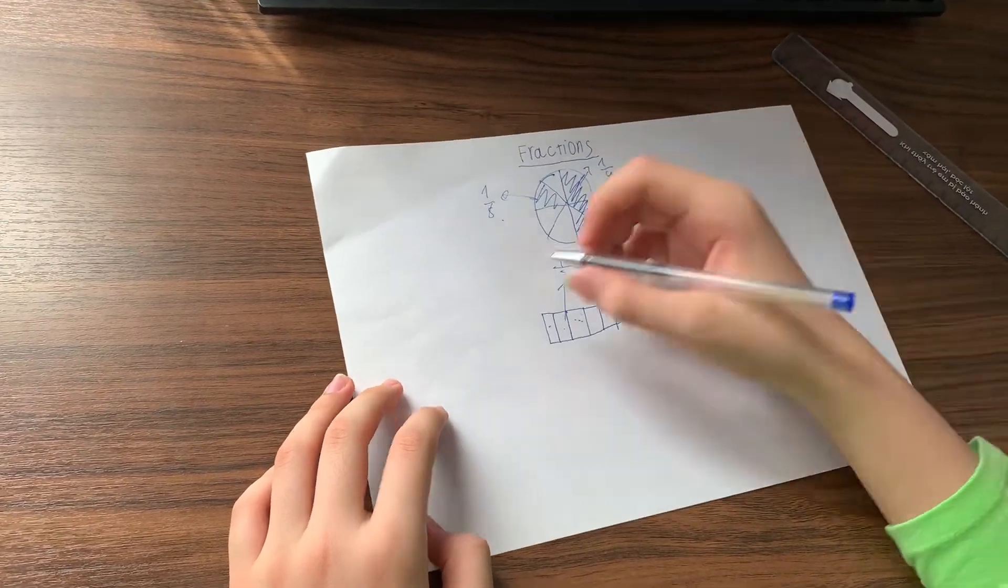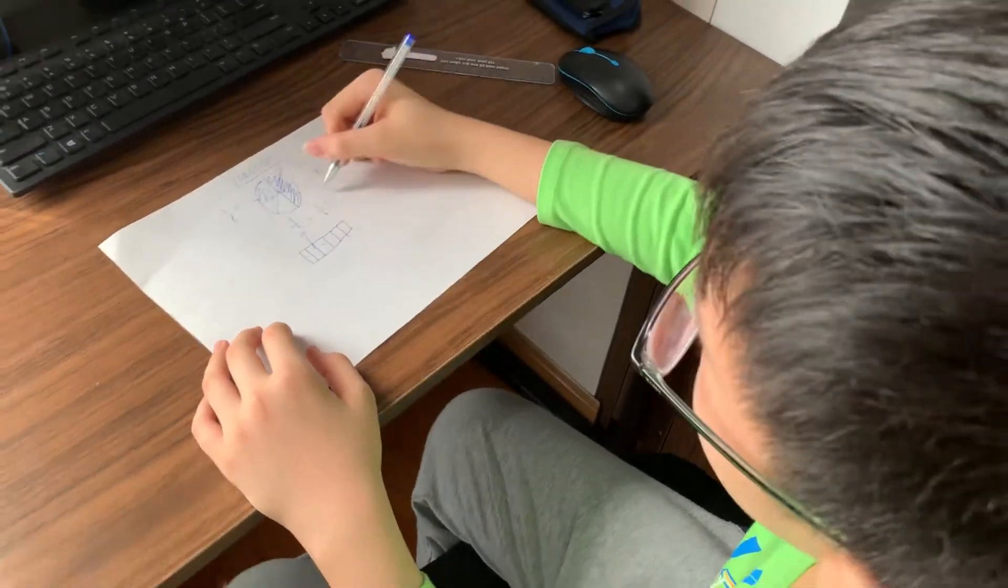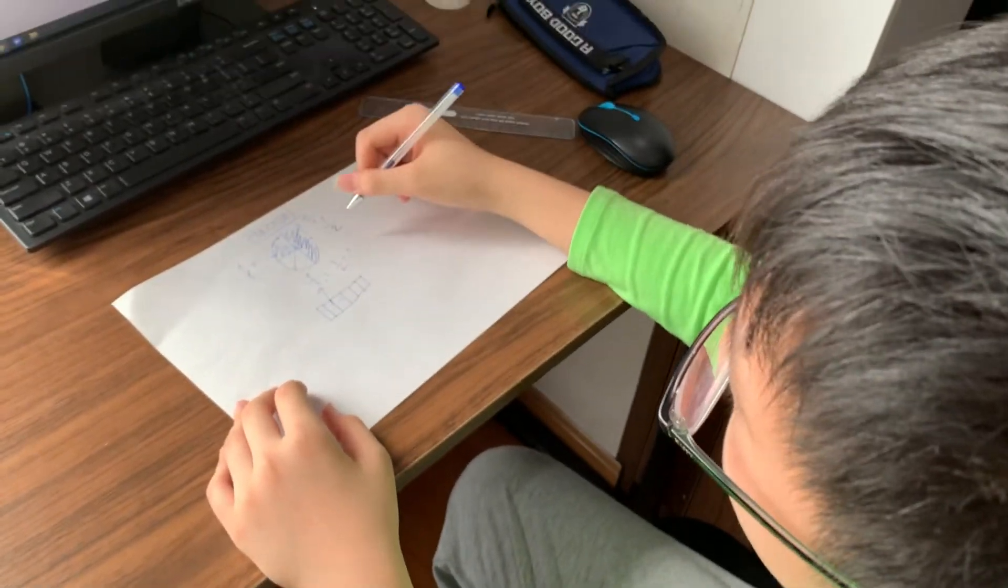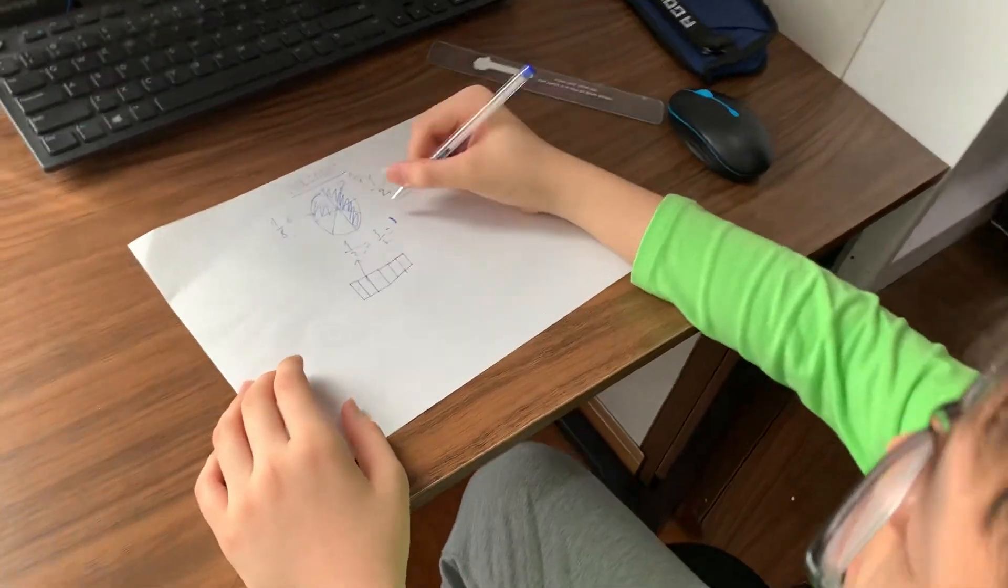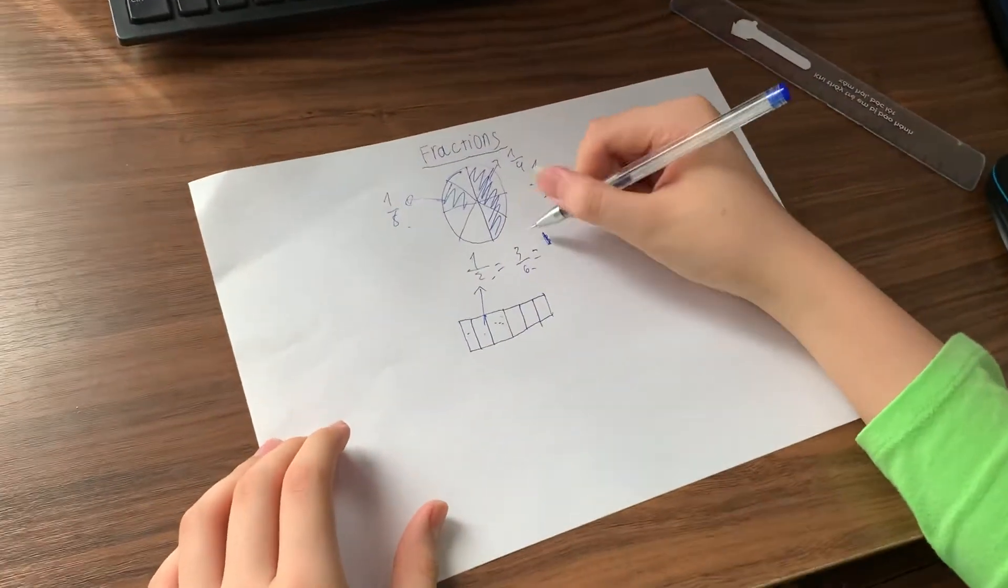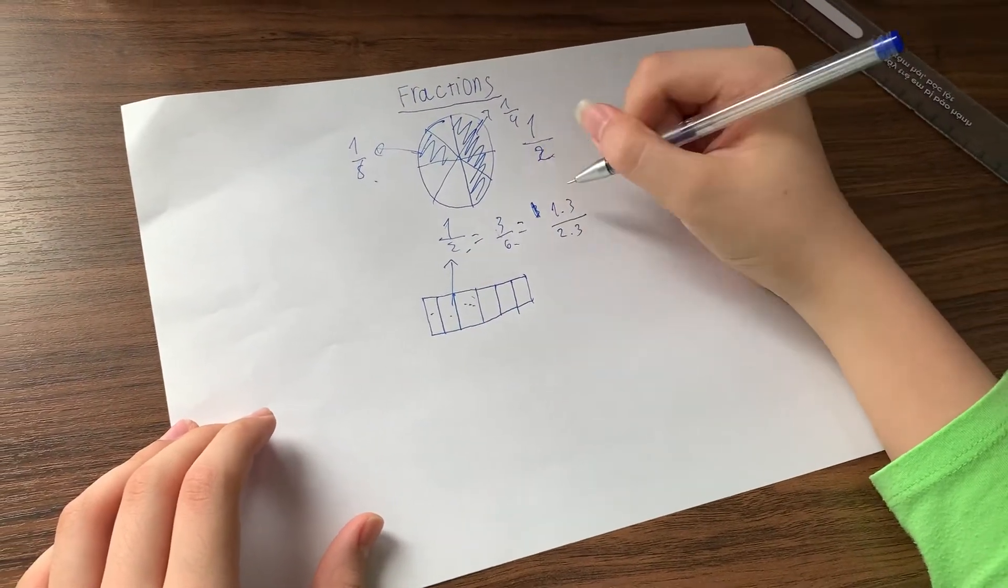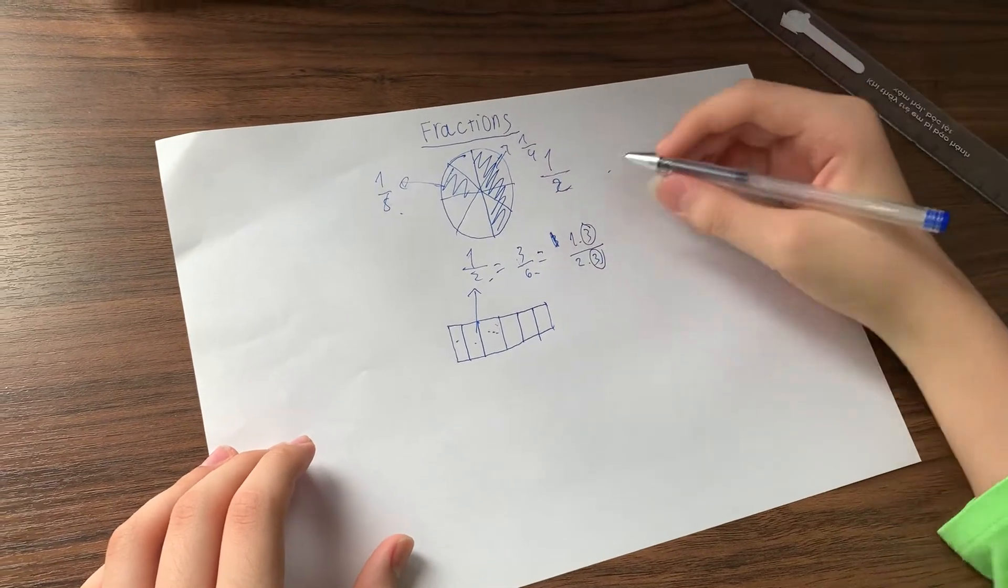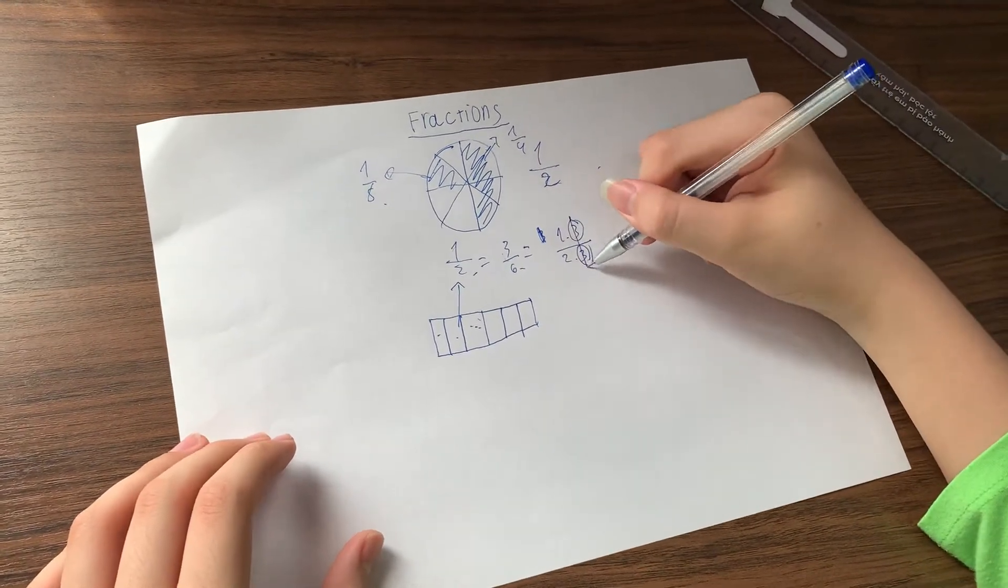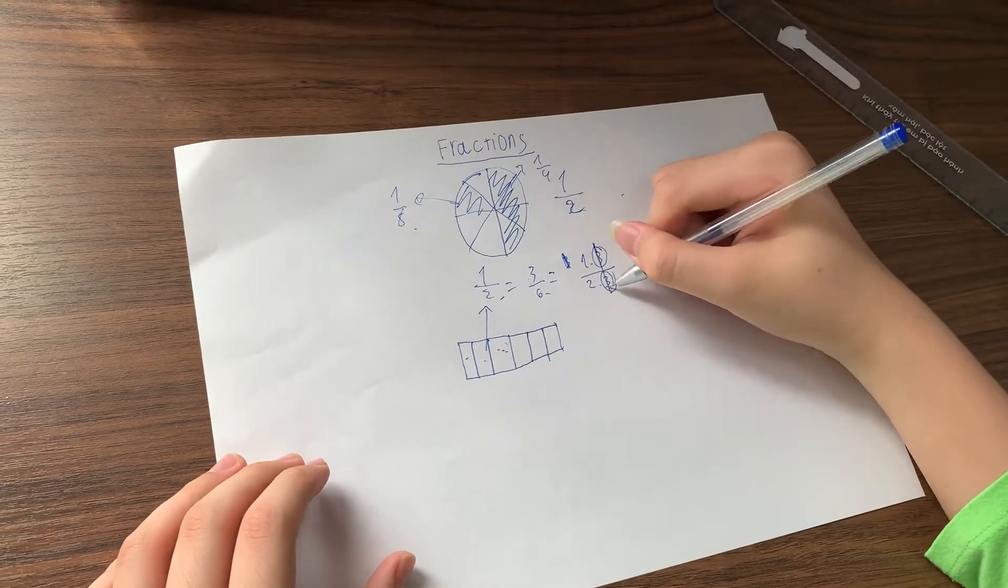So how do you simplify fractions? Here's what you have to do. Turn the fractions into its prime factors. So three is equal to one times three. And six is equal to two times three. Then you see both three. So you cancel them out. It's called common factors. And to do that, you just need to draw a line like this.